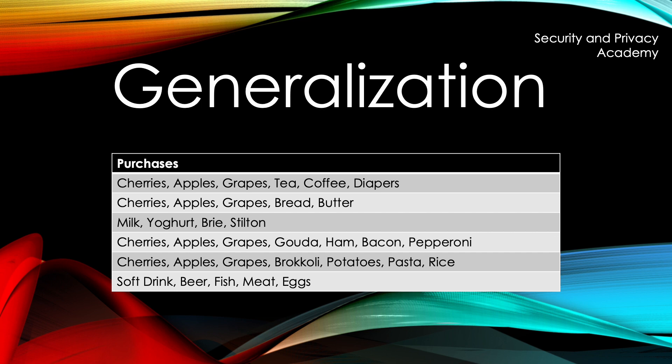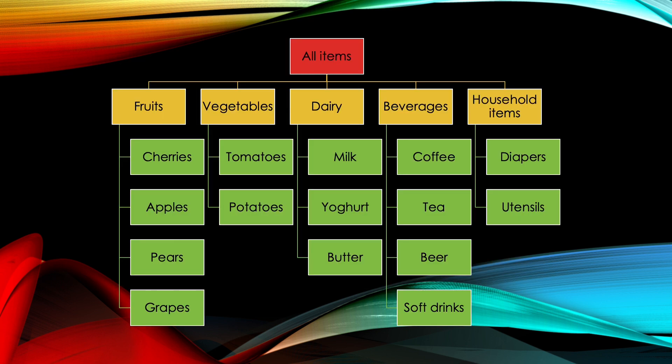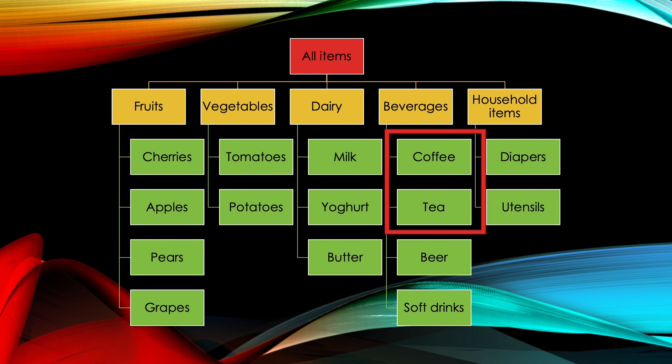We do not use suppression, however. Since we're dealing with categorical data — meaning the items are text and not numbers — we need to assume a hierarchy. Sticking with our grocery example, we already did some generalizations before. I have cherries, apples, and grapes, which can be generalized to fruit. Tea and coffee can be generalized to beverages. And diapers, if need be, to household items. My categories are arbitrary, of course, and the actual hierarchy is context-dependent.